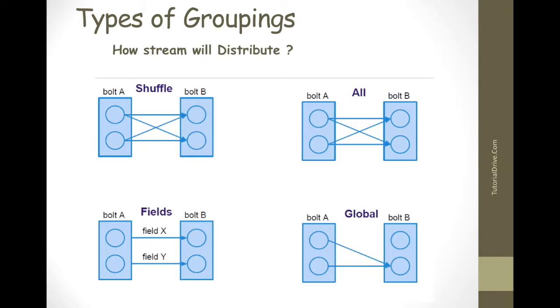So the first one is shuffle grouping. Shuffle grouping is the most commonly used grouping. Shuffle grouping distributes tuples in a uniform random way across the tasks. An equal number of tuples will be processed by each task. This grouping is ideal when you want to distribute your processing load uniformly across the tasks and where there is no requirement of any data-driven partitioning.